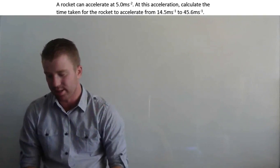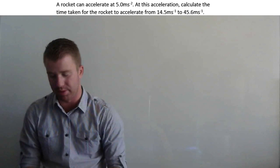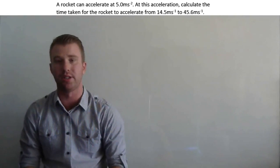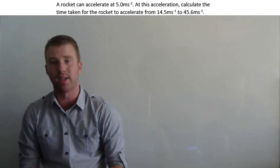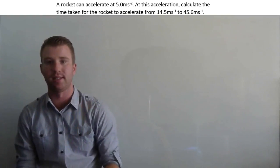The question is: a rocket can accelerate at 5 meters per second squared. At this acceleration, calculate the time taken for the rocket to accelerate from 14.5 meters per second to 45.6 meters per second.